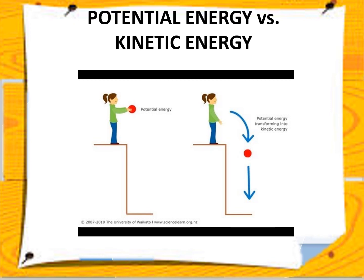In another diagram, a girl is holding a ball at a certain position. While the girl is just holding the ball, it has potential energy. However, once the ball is dropped by the girl, the potential energy changes into kinetic energy. The diagram is very simple to understand.